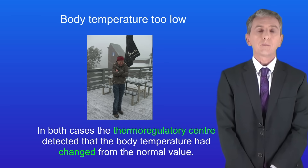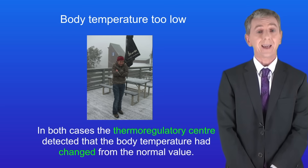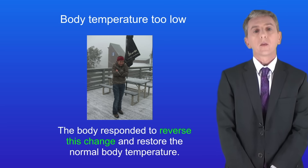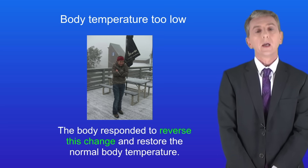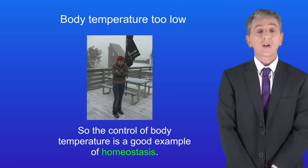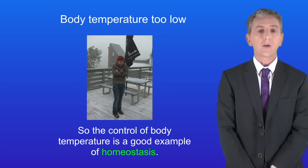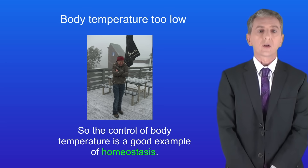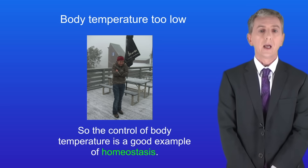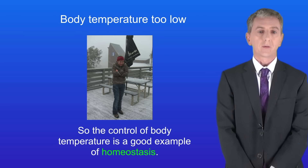In both cases, the thermoregulatory center detected that the body temperature changed from the normal value, and the body responded to reverse this change and restore the normal body temperature. So the control of body temperature is a good example of homeostasis. Remember, you'll find plenty of questions on how body temperature is controlled in the revision workbook — you can get that by clicking on the link above.